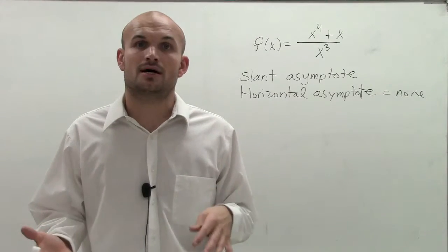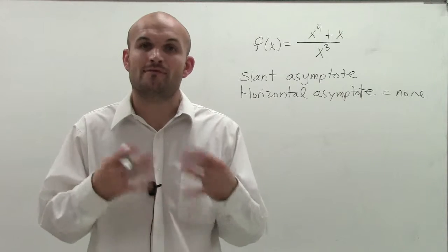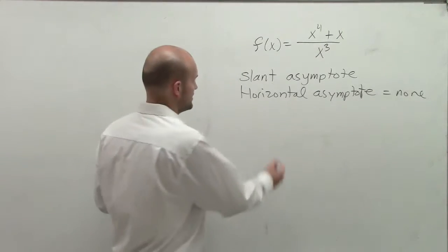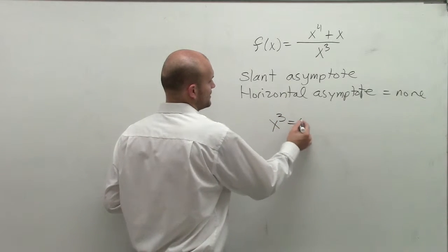So in dealing with rational functions, whenever we have our denominator equal to zero, we're going to have a vertical asymptote. So what I'm going to do is I'm going to set x cubed equal to zero.